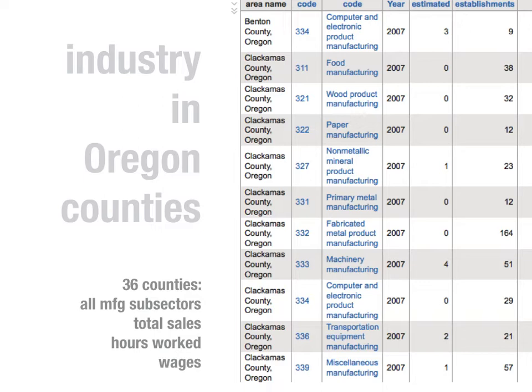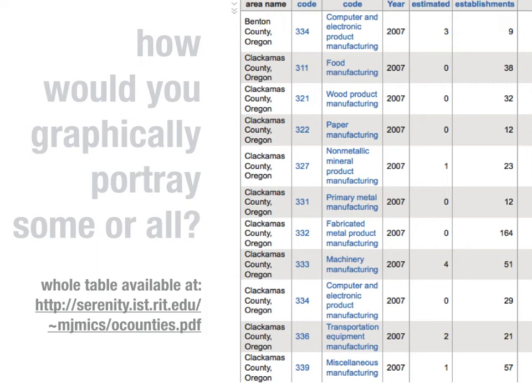It contains 36 counties in Oregon. You can see here Benton County and then mostly Clackamas County — all manufacturing subsectors, total sales, hours worked, wages, industries in Oregon counties. How would you graphically portray some or all of this data? That's the question.